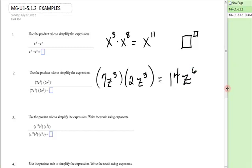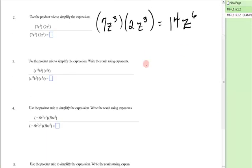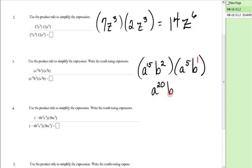Next, we have a¹⁵b² times a⁵b. In this problem, you're reminded that if you have a base with no exponent, it's an implied one. So a to the 15 plus 5 is 20, and b to the 2 plus 1 is 3. The answer is a²⁰b³.